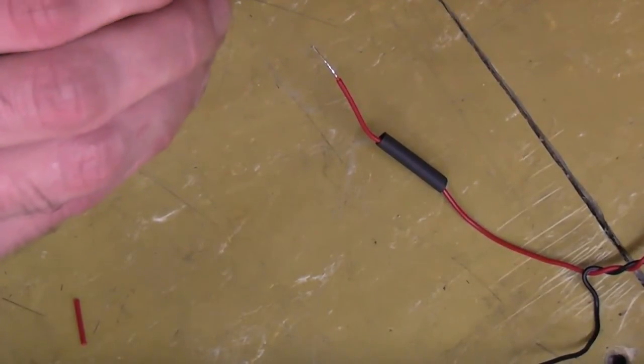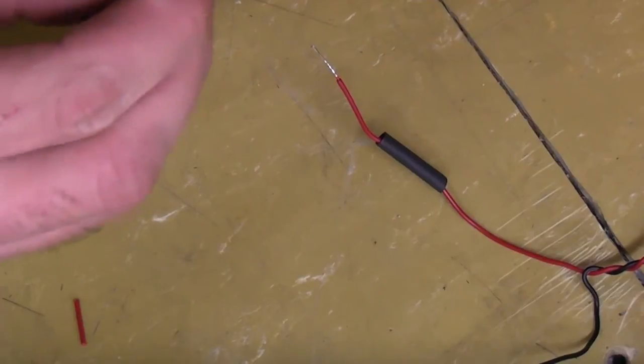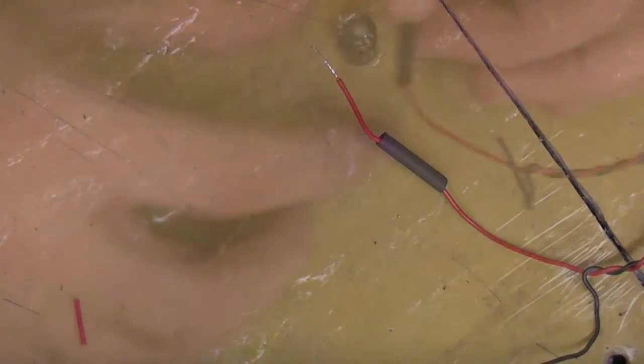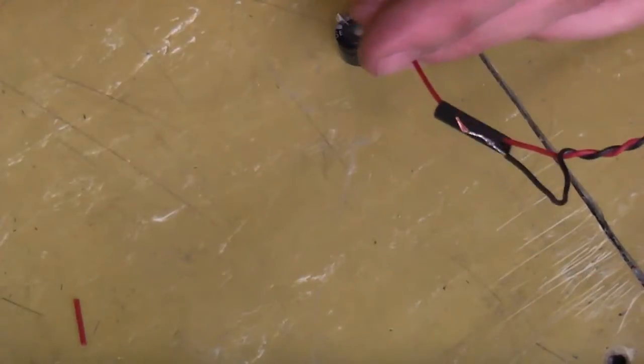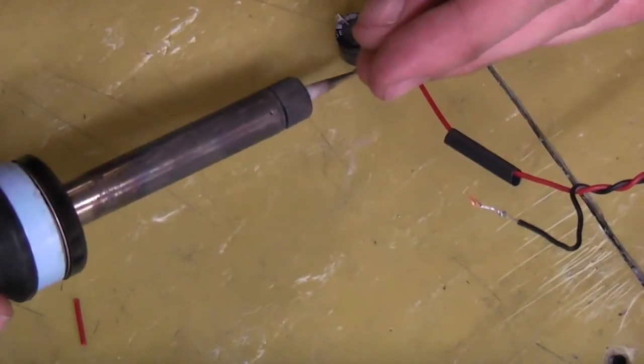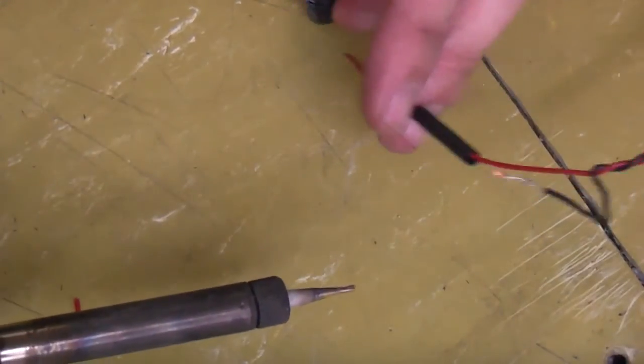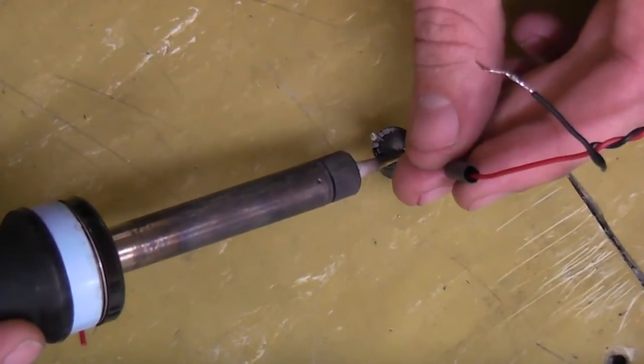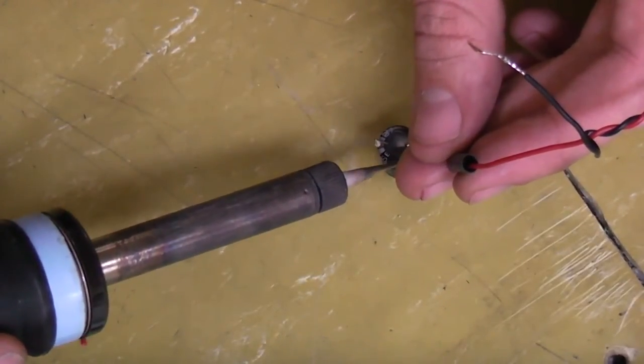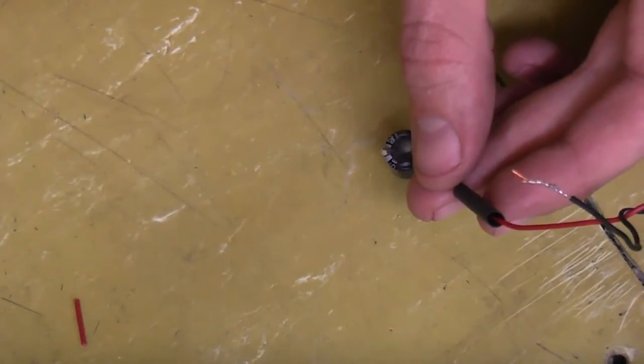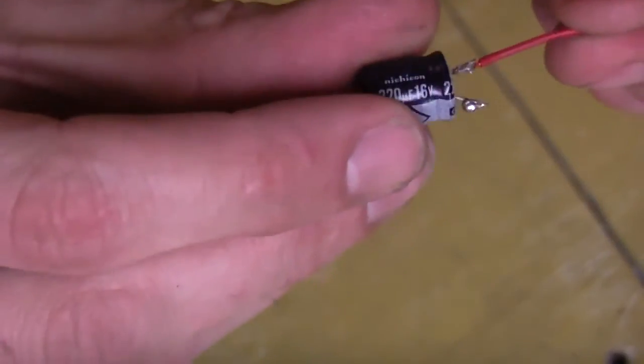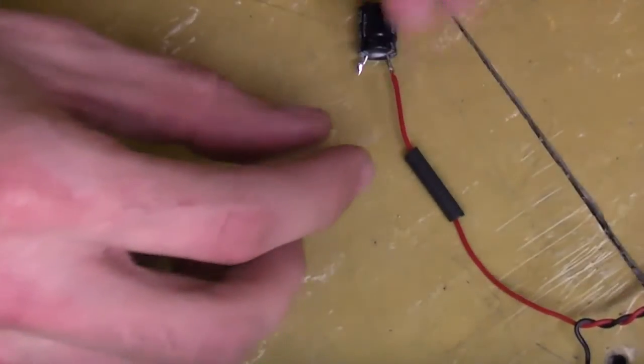And again, you've got to make sure that the positive leg goes towards the chip. Just move it over so you can see. Alright, so here we go, solder it onto the positive leg of the capacitor.